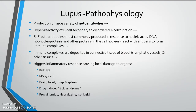The pathophysiology involves production of a large variety of autoantibodies, hyperreactivity of B cells secondary to disordered T cells — so both lymphocytes are not working well. Autoantibodies, commonly produced in response to nucleic acids, DNA, ribonucleoproteins, and other proteins, react with antigen to form immune complexes which circulate and are deposited in connective tissue, blood, and lymphatic vessels. I like to call lupus a disorder of the "itises" because it triggers inflammation and causes local organ damage.